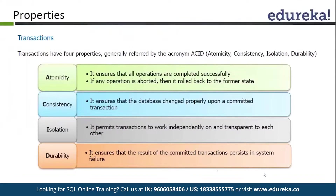Next is Isolation. Isolation simply means that each transaction is independent of other transactions. No transaction can overlap with any other transaction — it is isolated. Durability simply means once all the transactions are executed and we have committed them using the commit keyword, all the results will be committed and will remain permanently in our database server. This is called Durability. This is the ACID principle that we follow in transactions.